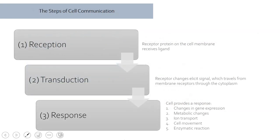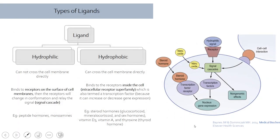There are three steps to cell communication. First is reception: when a ligand arrives and the receptor on the cell binds it. Second is transduction: the receptor initiates changes inside the cell, transmitting the signal to necessary organelles such as the nucleus. Third is response: the cell provides an answer or change to the signal, which can be in the form of changes in gene expression, metabolism, ion transport, cell movement, or enzymatic reaction, depending on the signal.